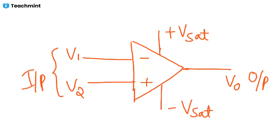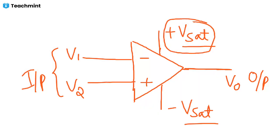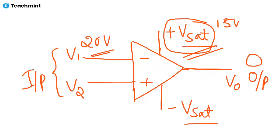The saturation voltage is set such that the operational amplifier will not give an output greater than the saturation voltage. For example, if the input voltage is 20 volts and the saturation voltage is 15 volts, the output will be clamped to V saturation. The op-amp will not give output voltage greater than V saturation.